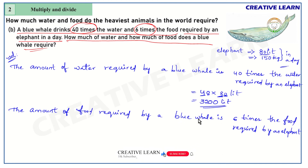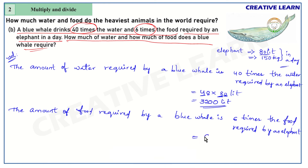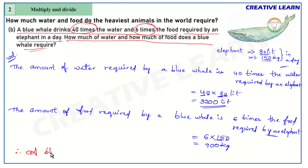For food, the amount of food required by a blue whale is 6 times the food required by an elephant — so 6 into 150 kg. In the ones place there is zero, keep it. Remaining number is 15; 15 sixes are 90 — so total food is 900 kg. Therefore, a blue whale needs 3200 liters of water and 900 kg of food per day.